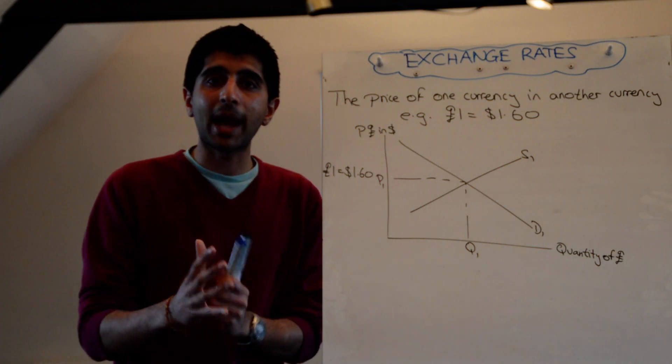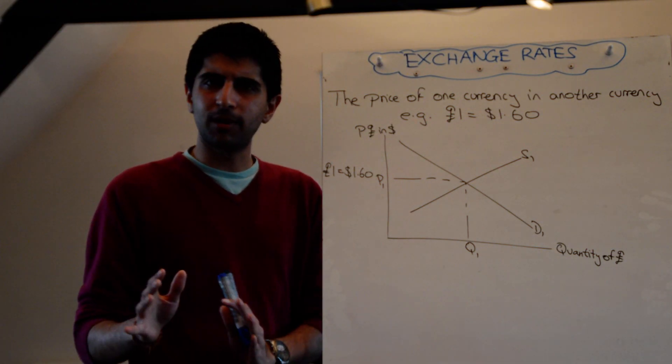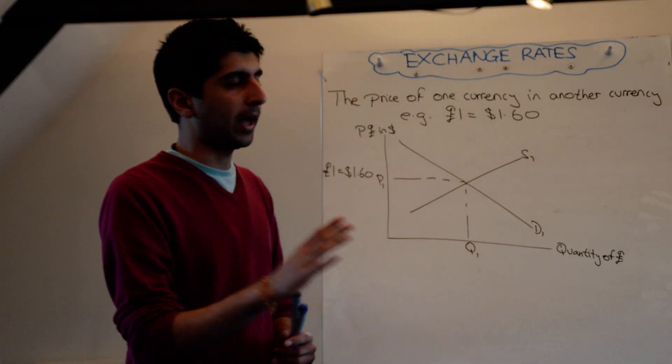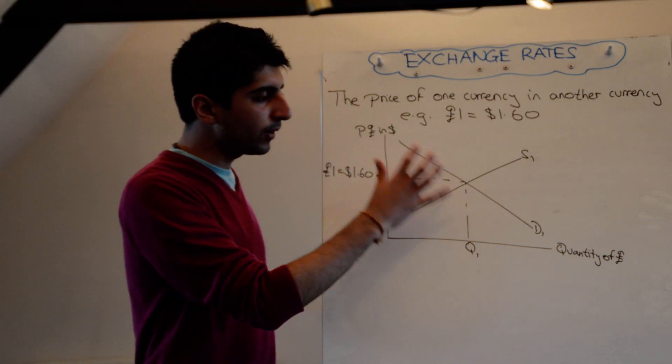So this is the market for the pound. The market for pounds, not random demand and supply. Very specifically, demand and supply of the pound and for the pound. That's it. That's how an exchange rate is determined.